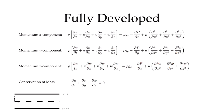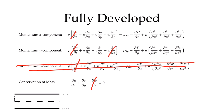Now let's apply the fully developed assumption. First, let me cross off the terms already eliminated — the steady assumption removed the time derivatives, and the 2D assumption removed the z terms. Fully developed means velocity derivatives in the x direction are zero, so du/dx = 0. This immediately makes several terms go to zero.